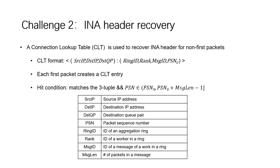When a first packet arrives at the switch, it creates a new CLT entry. If the following packets match the same three-tuple — including the source IP address, destination IP address, and the QP pair information — plus the packet sequence number falls within the range indicated by the first packet, then the packet obtains its corresponding header information.